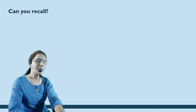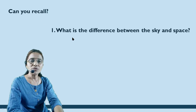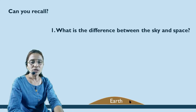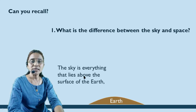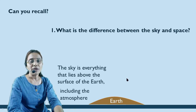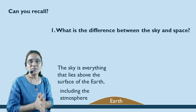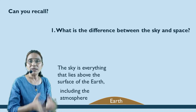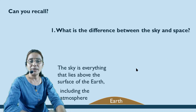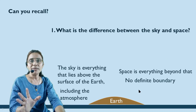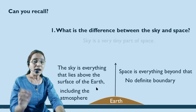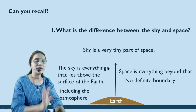Can you recall? There are two questions. The first simple question is: what is the difference between sky and space? Now, suppose this is the earth. Sky is everything that lies above the surface of the earth, which includes the atmosphere. The atmosphere causes scattering of light; it has different constituents. Space is everything beyond that, and there is no definite boundary. Simply, we can say that sky is a very tiny part of space.